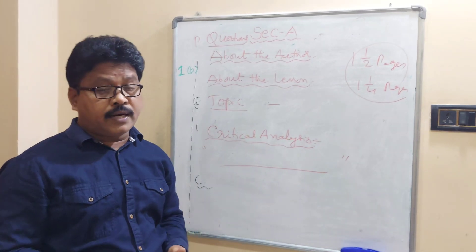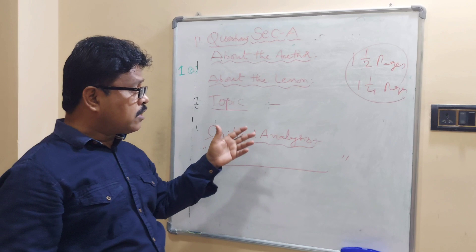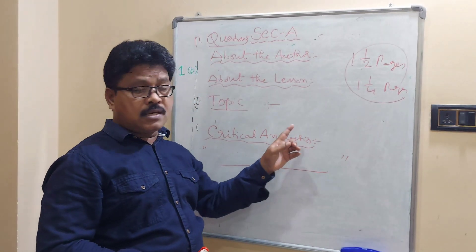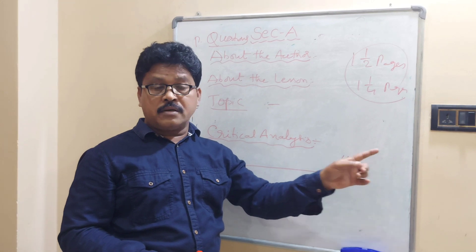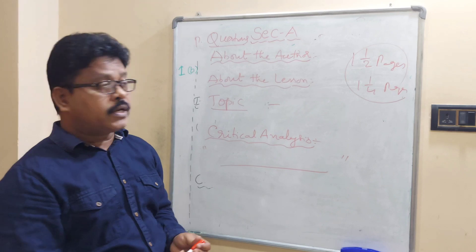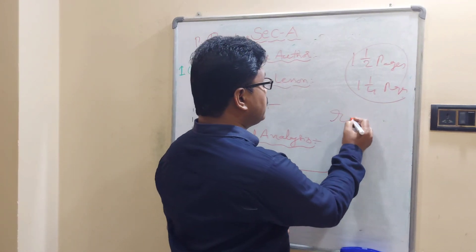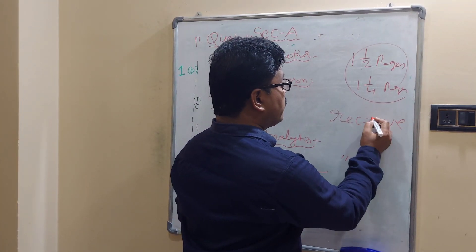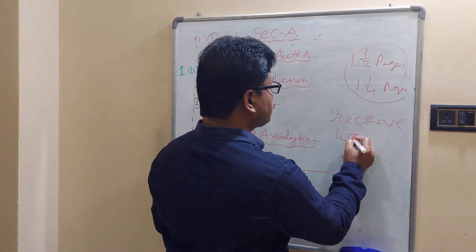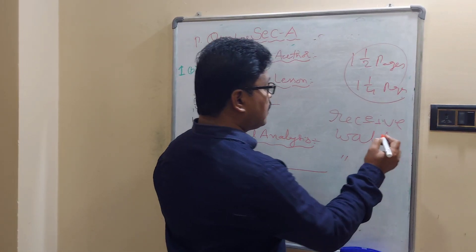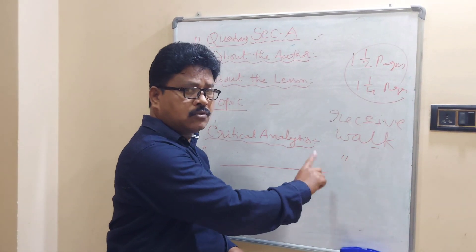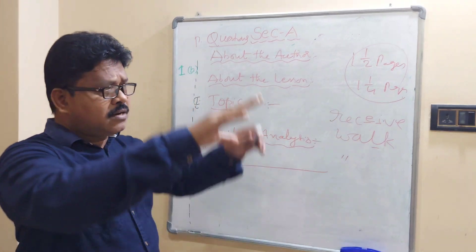You need not write full sentences except for Common Errors — correction of sentences — where you must write the full corrected sentence. For example, write 'Economics is an interesting subject' (not 'are'). For missing letters, write the full word. For silent letters, write the word and underline the silent letter. For match the following, write '1-D, 2-B, 3-A' and so on — you need not write out full columns A and B.